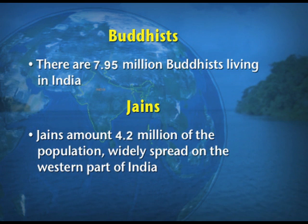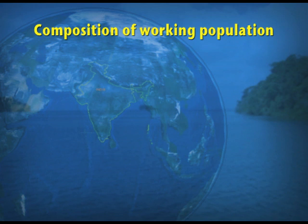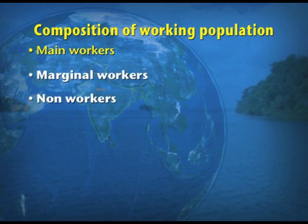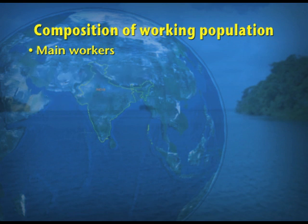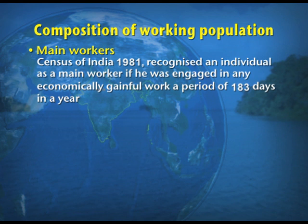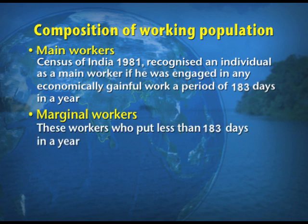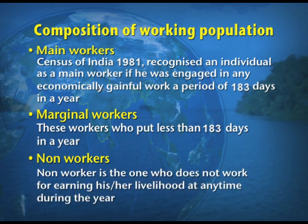The last composition is the composition of working population based on productive work. The population of India is divided into three groups: main workers, marginal workers, and non-workers. Main workers are those who do economically gainful work for a period of 183 days or more in a year. Marginal workers are those who work less than 183 days in a year. Non-workers are those who do not work for earning their livelihood at any time during the year.